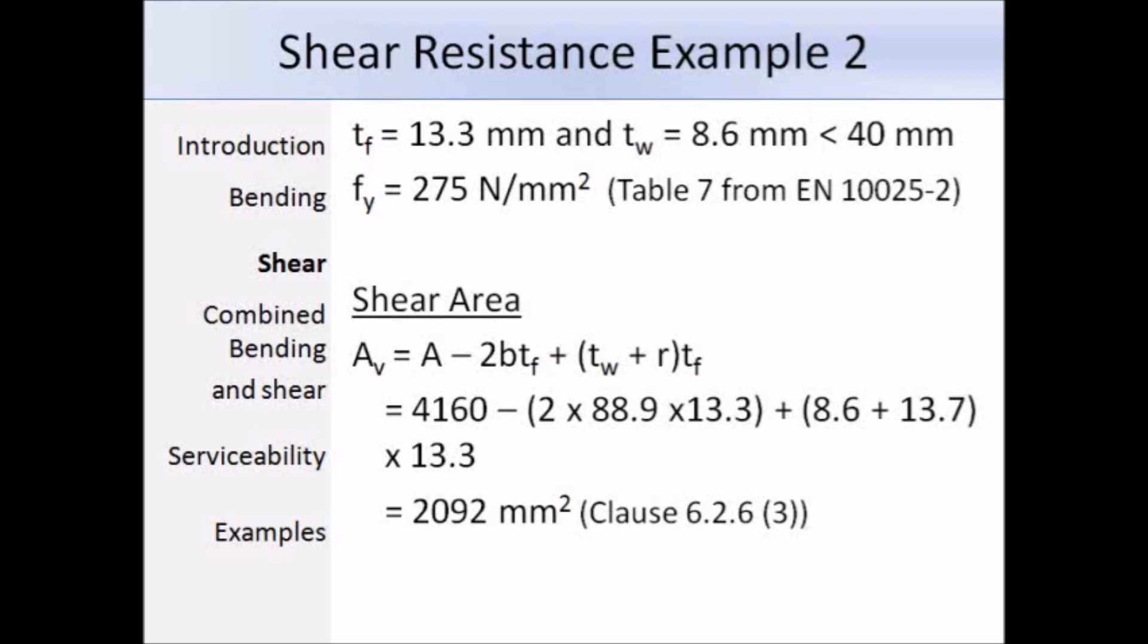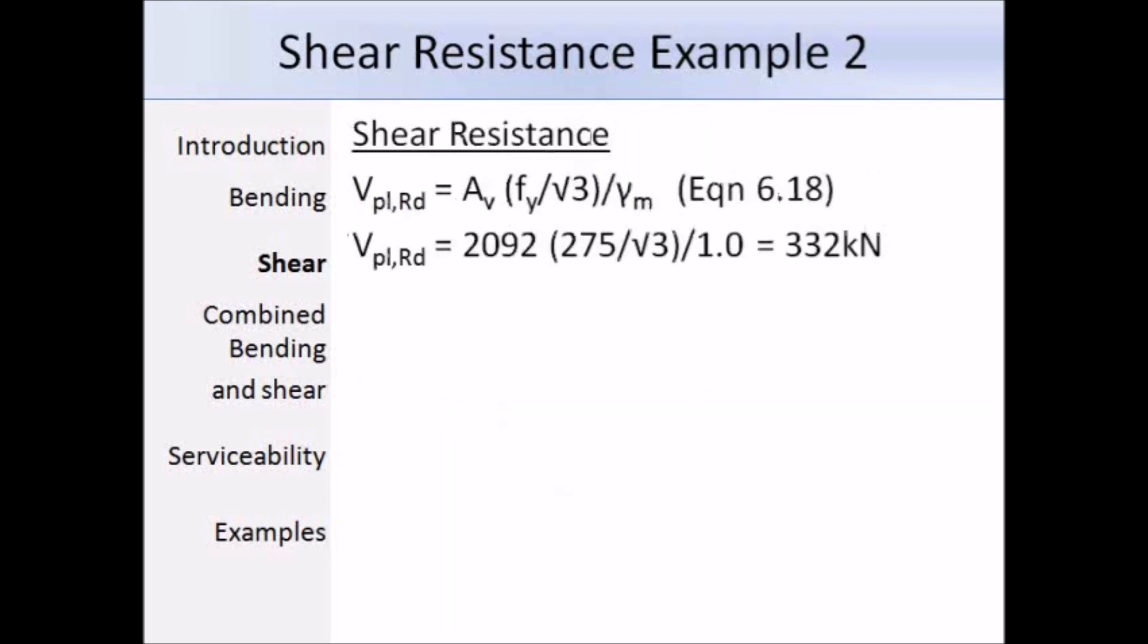Next, we need to calculate the shear area and for that we refer to Clause 6.2.6.3, which gives this expression to work out the shear area of a rolled channel section with the load parallel to the web. All of these terms, A, B, t_f, t_w and R are section properties and we've already listed them on the previous slide. So it's just a matter of substituting in the values to get the shear area and we get 2,092 millimetres squared. Now that we have the shear area and the yield strength, we can substitute the values into expression 6.18 to get the shear resistance. That works out as 332 kN. In the next slide, we're going to compare this value to the result using the Master Series software.